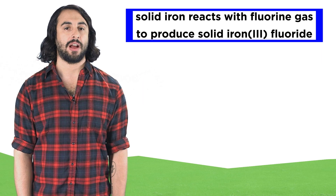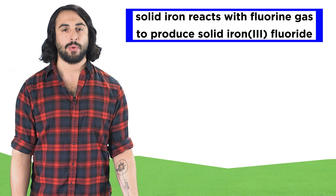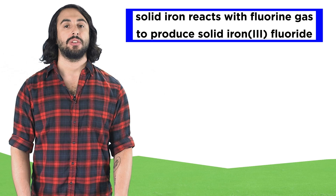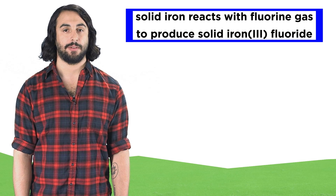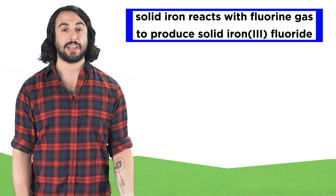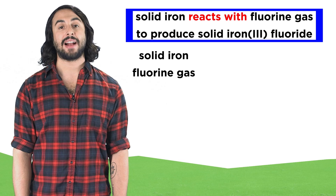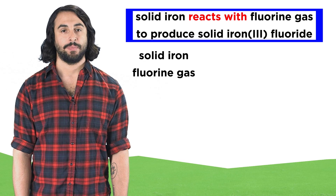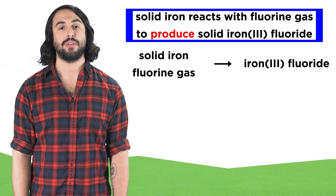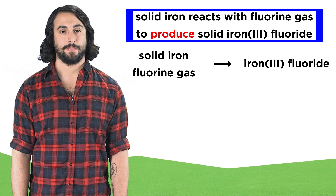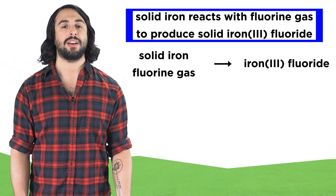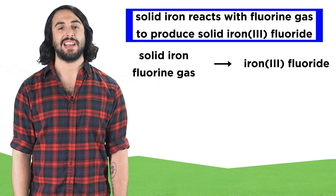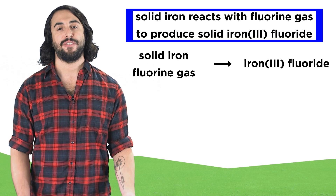Let's go the other way around. Say we have the following sentence: solid iron reacts with fluorine gas to produce solid iron three fluoride. Let's identify some key words here. Reacts with tells us that iron and fluorine are the reactants, and produce tells us that iron three fluoride is the product, so those should be separated by an arrow. Now let's translate the words into chemical symbols and phase symbols.